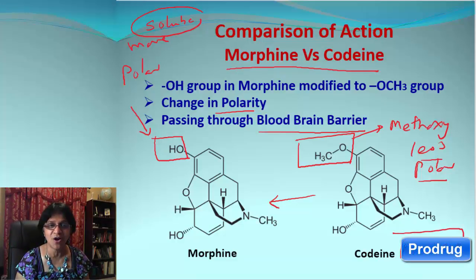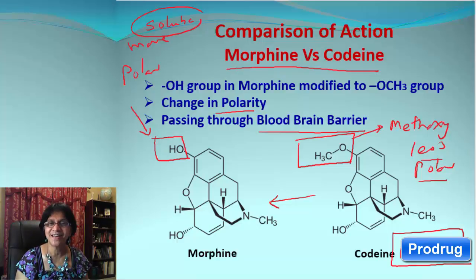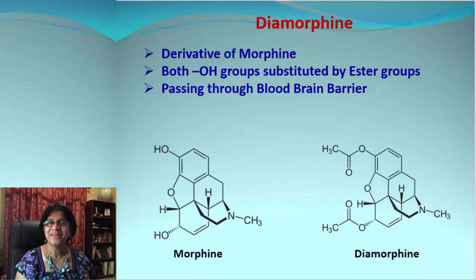Therefore, codeine is also called a prodrug — it is a precursor of an active drug.